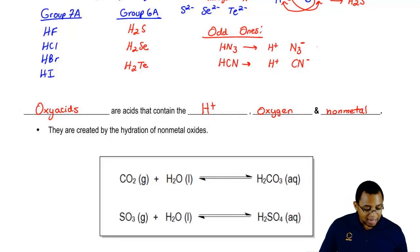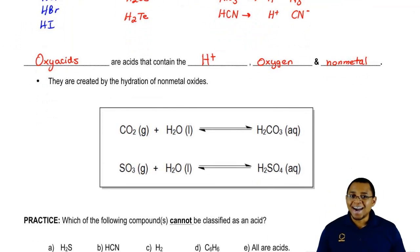Now, oxyacids are formed when we hydrate non-metal oxides. In this example here, our non-metal oxide would be carbon dioxide, and here would be sulfur trioxide.